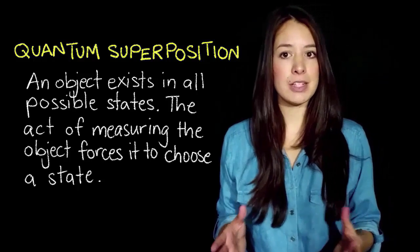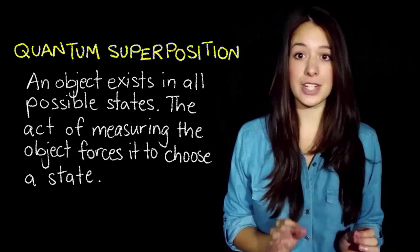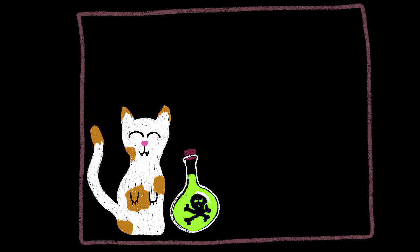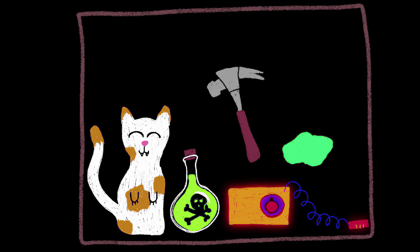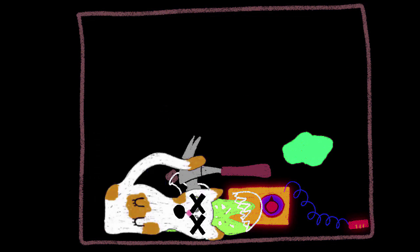So there's a very famous thought experiment about this called Schrödinger's cat. In a box, there is a cat, a vial of poison, a hammer, a Geiger counter and some radioactive material. When the radioactive material decays, the Geiger counter detects it, triggers the hammer to smash the vial and kills the cat.